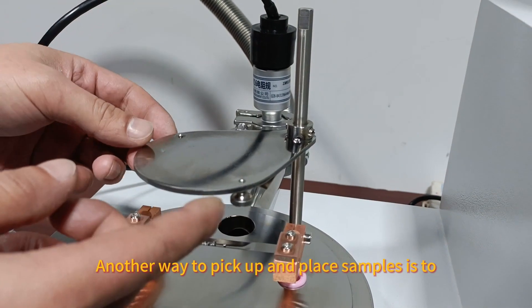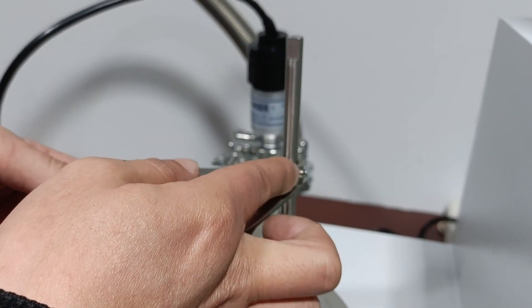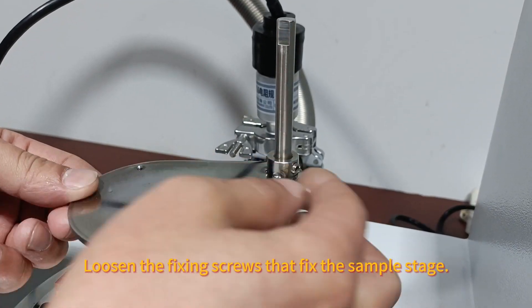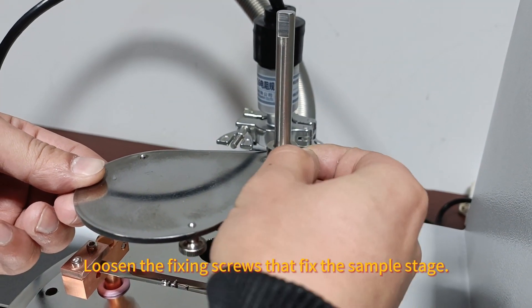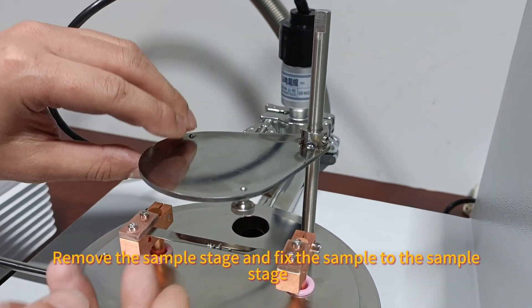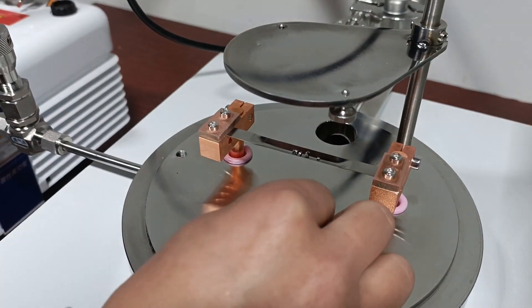Another way to pick up and place samples is to loosen the fixing screws that fix the sample stage, remove the sample stage, and fix the sample to the sample stage.